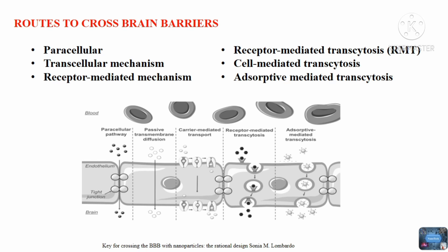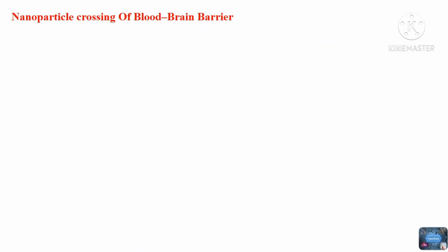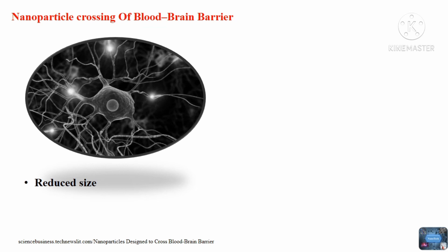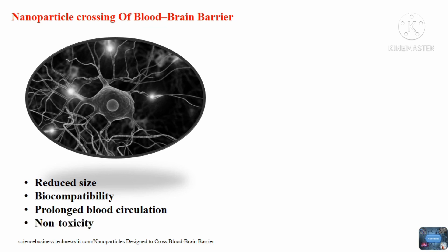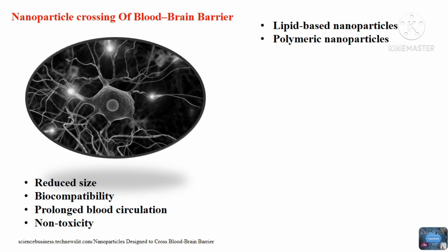Due to the physicochemical properties of nanoparticles, such as reduced size, good biocompatible nature, prolonged blood circulation, and non-toxicity, nanoparticles are the most promising alternative to deliver drugs to the brain through the blood-brain barrier. Several types of nanoparticles have been used for crossing the blood-brain barrier, such as lipid-based nanoparticles, polymeric nanoparticles, dendrimers, and inorganic nanoparticles.